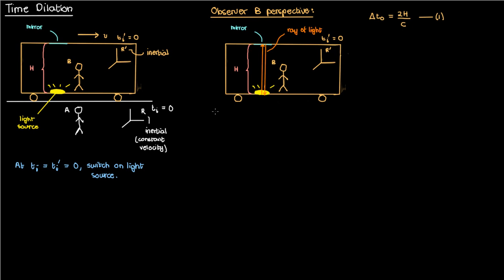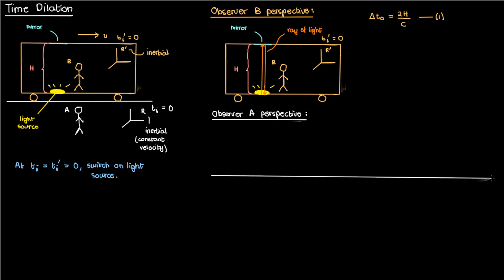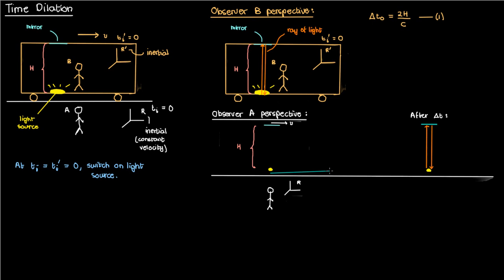Observer B was easy to understand, but let's look at things from observer A's perspective. Observer A is standing on a train platform at rest with respect to the ground. In observer A's frame of reference, the source of light and the mirror are moving at a velocity v to the right. I'm not going to draw the rest of the train, just the source and the mirror to keep things simple.